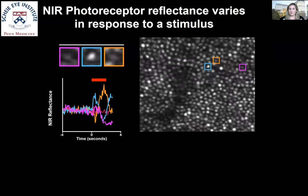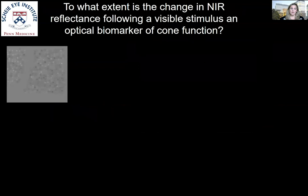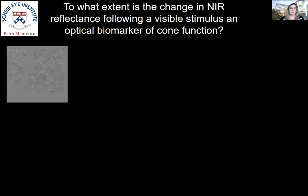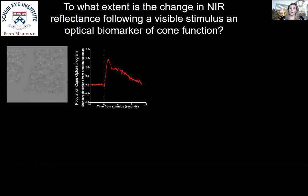We asked ourselves: to what extent is this change in near-infrared reflectance the opto-retinogram, and does it match known properties of cone function? We needed to find a way to quantify our heterogeneous signal. We standardize the cone's reflectance in the pre-stimulus condition and look at how the reflectance diverges from that initial state. We summarize this by taking the standard deviation across all cones within the population to arrive at our opto-retinogram response, which has a low value in the pre-stimulus case and rises when the stimulus turns on.